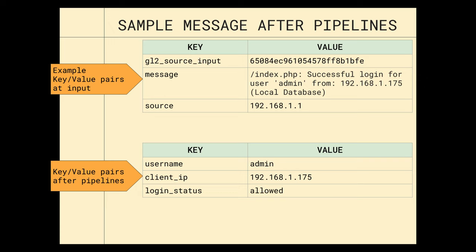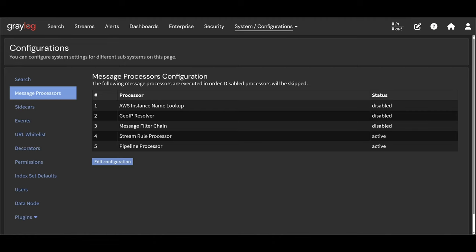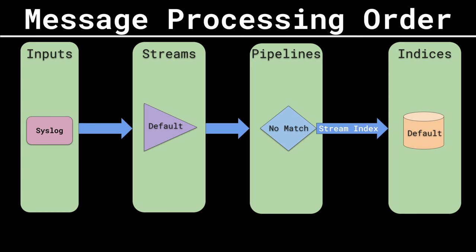Once you really understand how streams and pipelines work, this message processing order is really going to be up to you, your use cases, and how you like doing things. I don't think there's a right or wrong way of doing this, hence why it's configurable. For this video and all other videos in this series, they'll be in this order. The message flow will look something like this: we have inputs where we input our message into Graylog, from here it will start flowing through the message processing configuration, hitting the stream rules first. All messages will match the default stream, and you can only remove messages from the default stream if they match another stream. My message will hit the default stream, then be forwarded along to pipeline processing. I don't have any pipeline rules configured, so it will bypass the pipeline module and move along to the index set for storage.